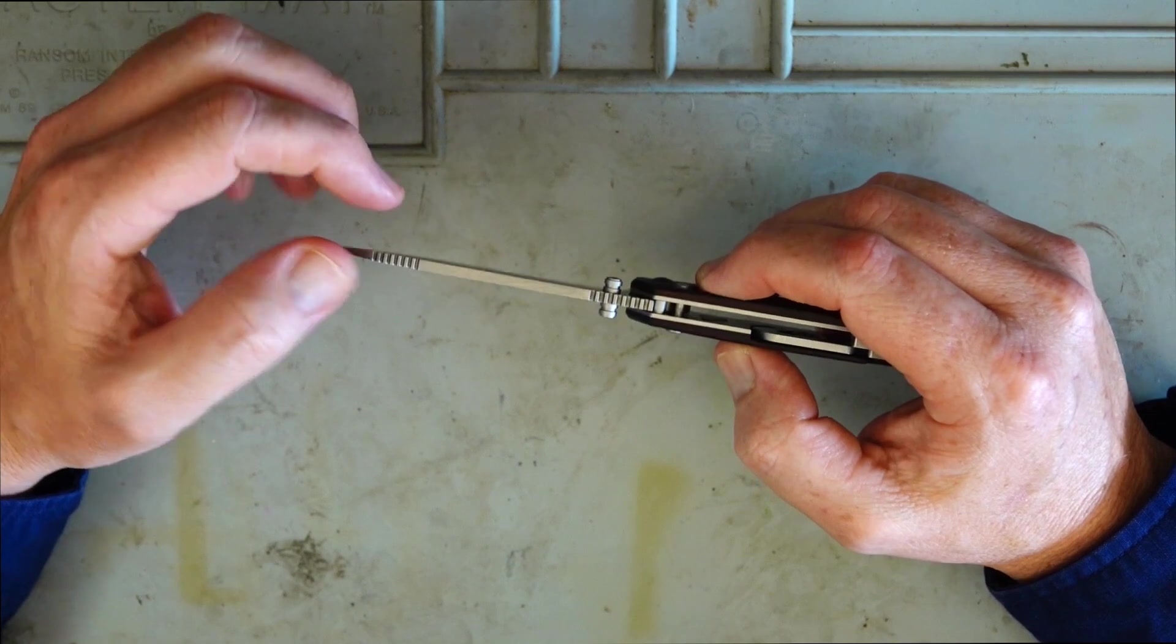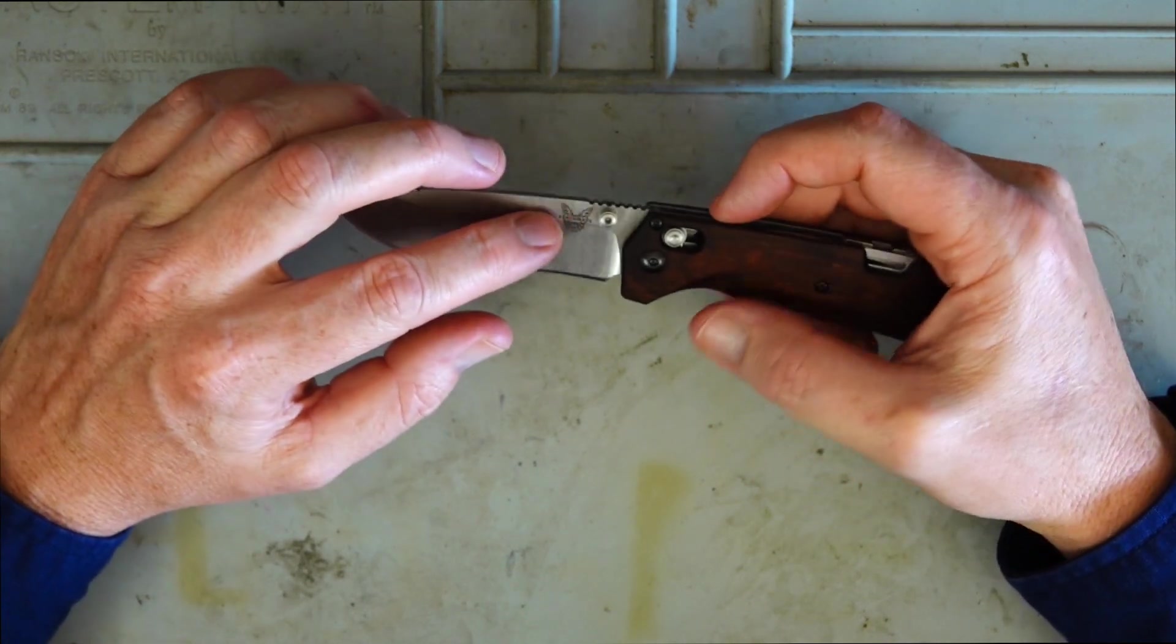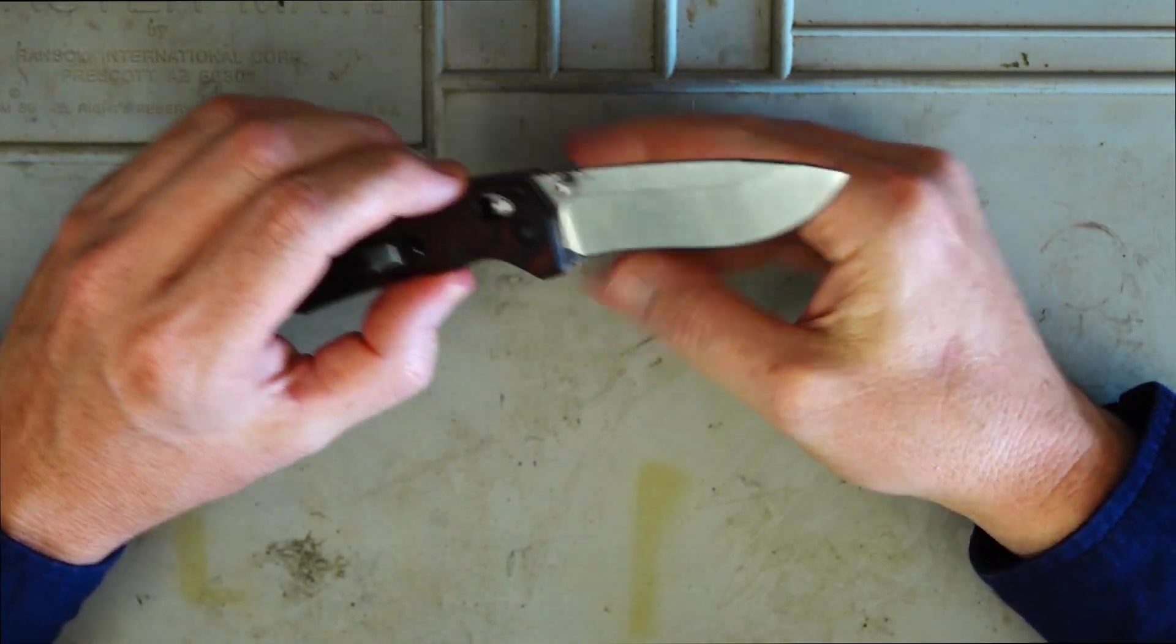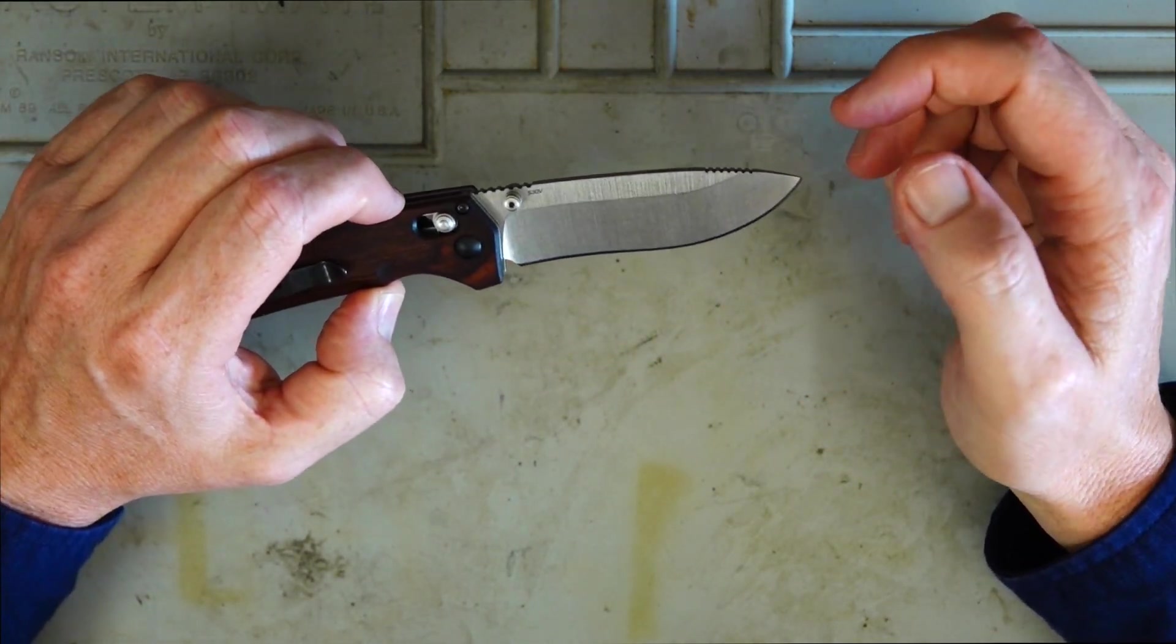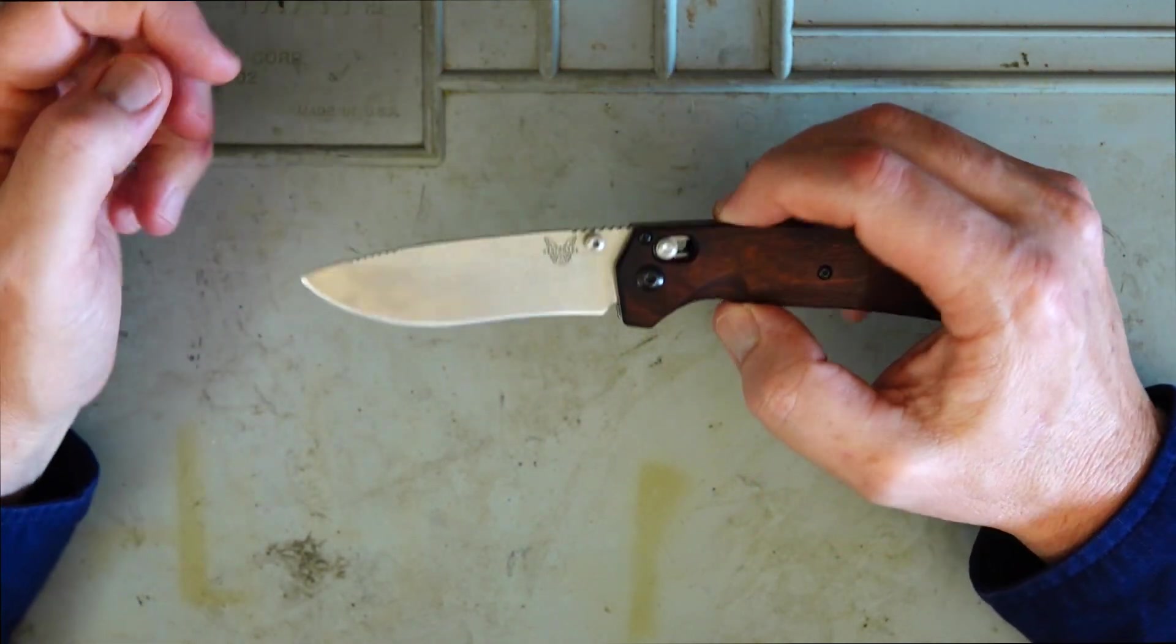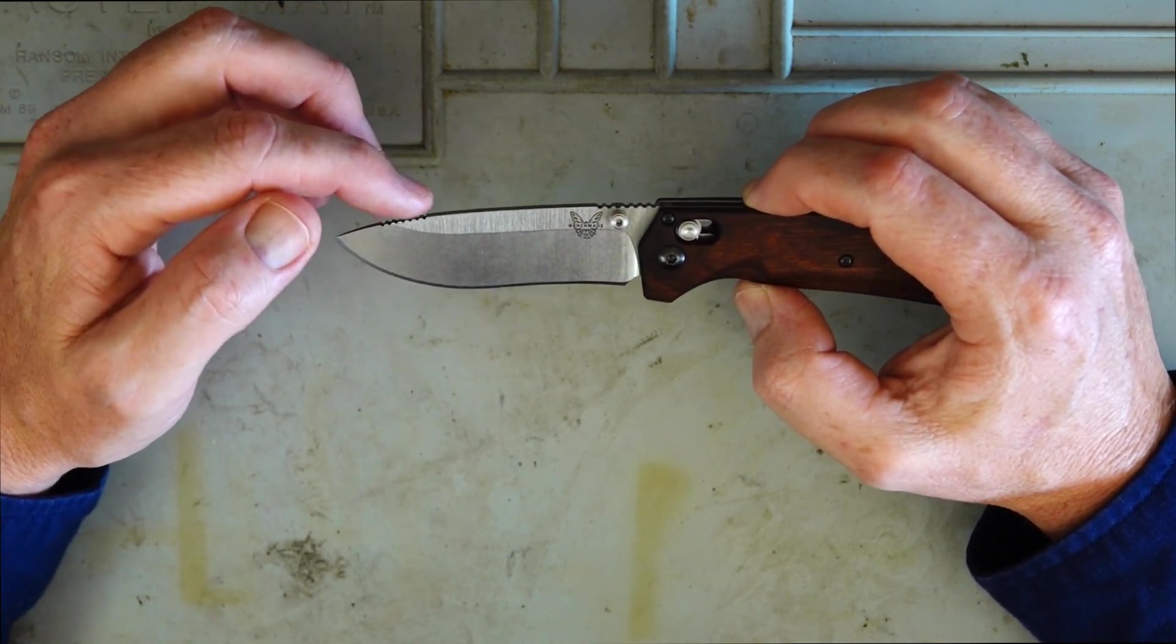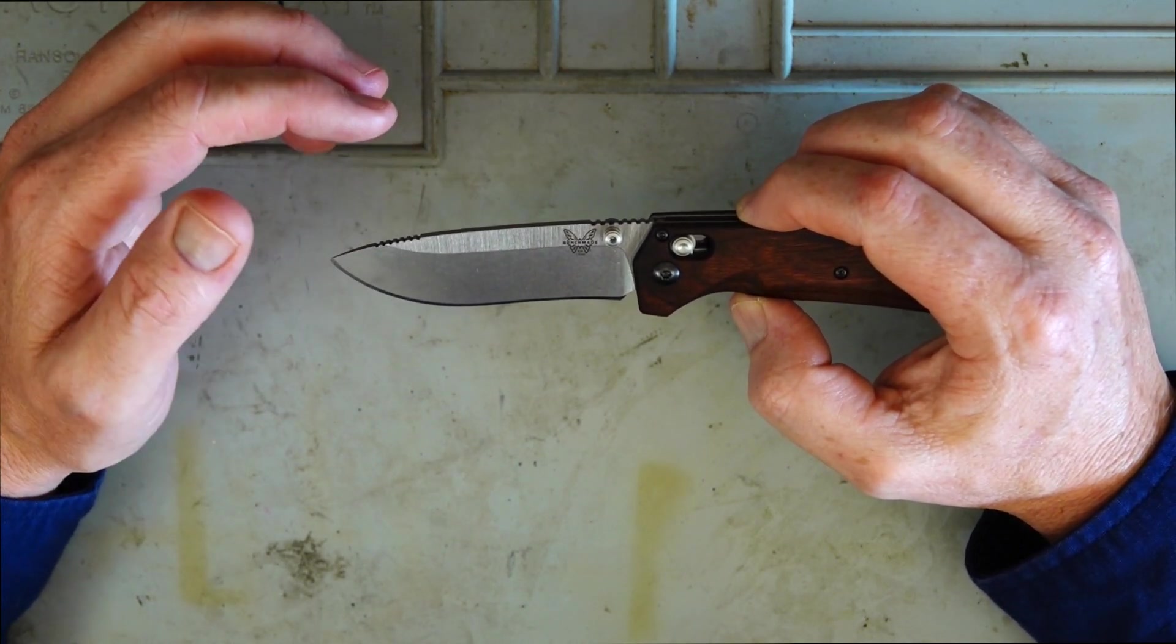The blade thickness on this is 0.124 of an inch or 3.15 millimeters. The steel on this is the premium S30V steel. So edge retention on this is 7 out of 10, corrosion resistance also 7 out of 10, ease of sharpening 5 out of 10. So really S30V is just a really nice balance of premium steel.